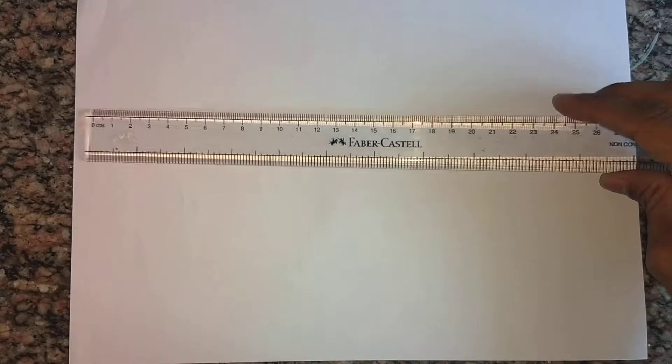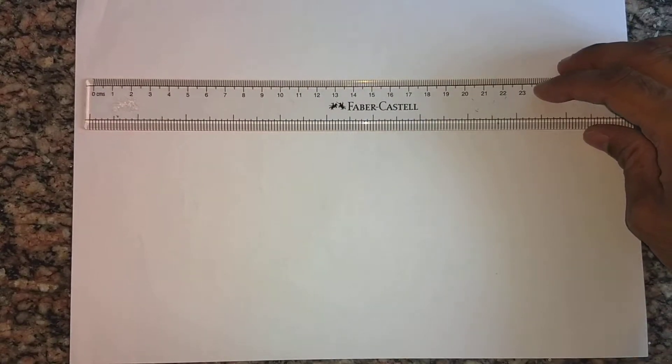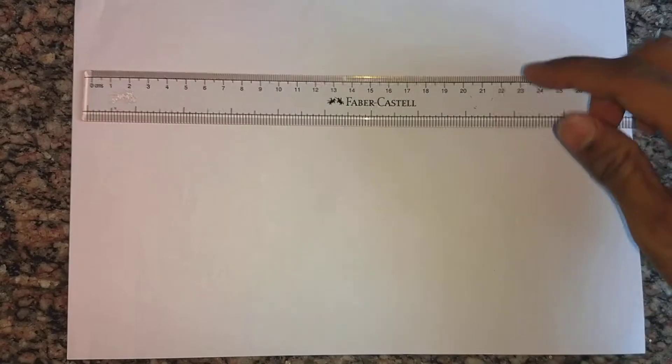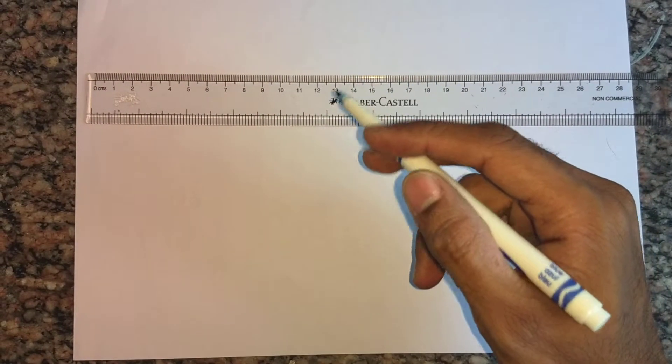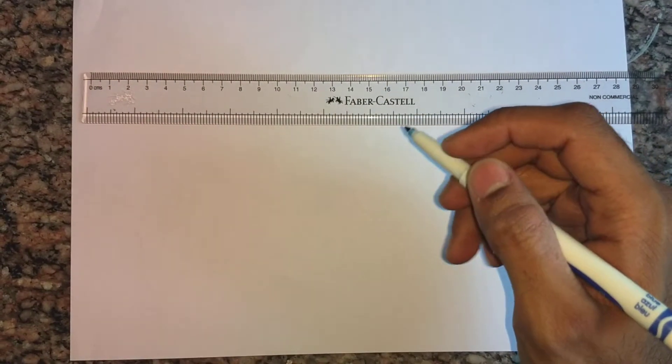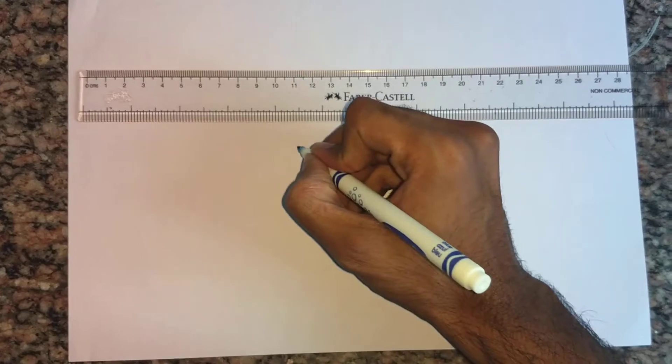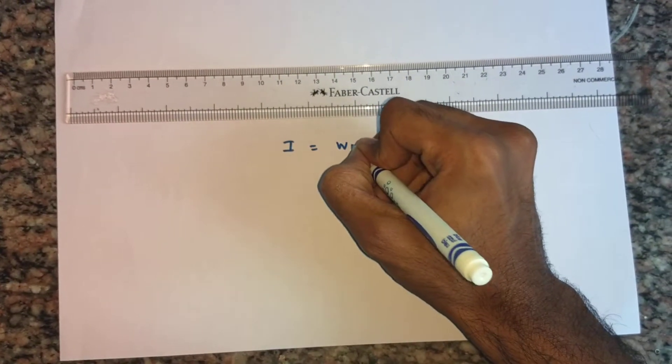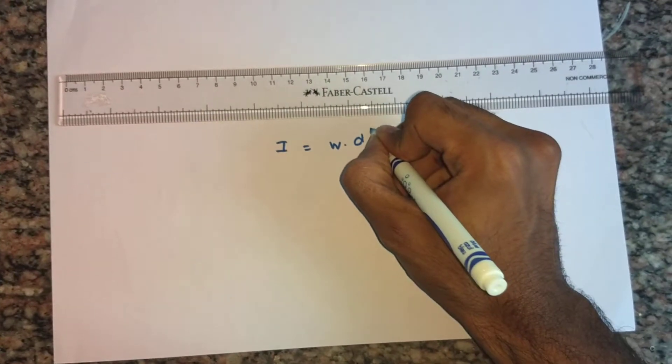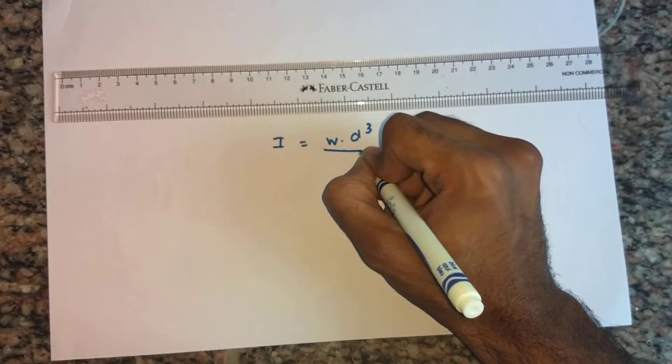Well, the answer is the area moment of inertia. The area moment of inertia changes as the orientation of the object changes. This ruler is a rectangular beam, and the moment of inertia for a rectangular beam is I equals W times D cubed over 12.